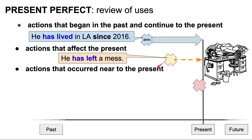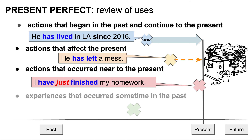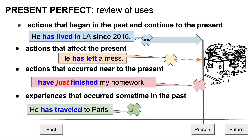We use the present perfect for actions that occurred near to the present. For example, I have just finished my homework — I finished five minutes ago. Lastly, we use the present perfect for experiences that occurred sometime in the past. For example, he has traveled to Paris.